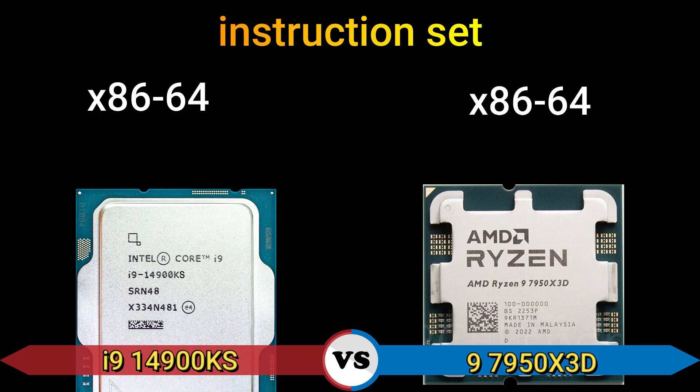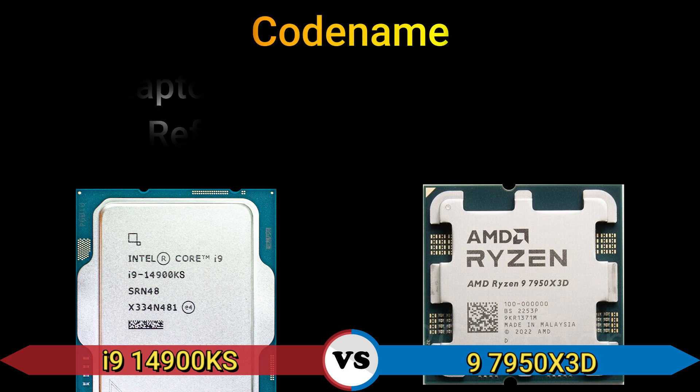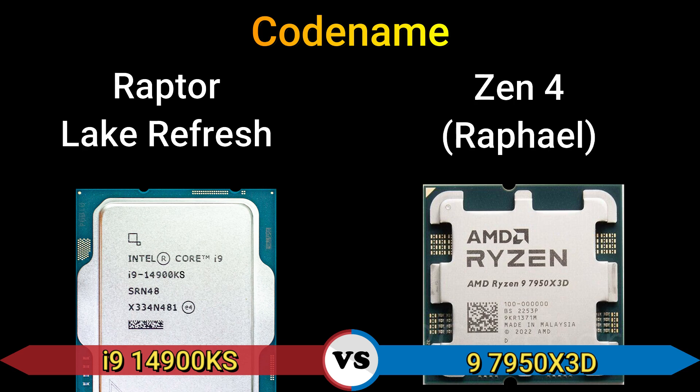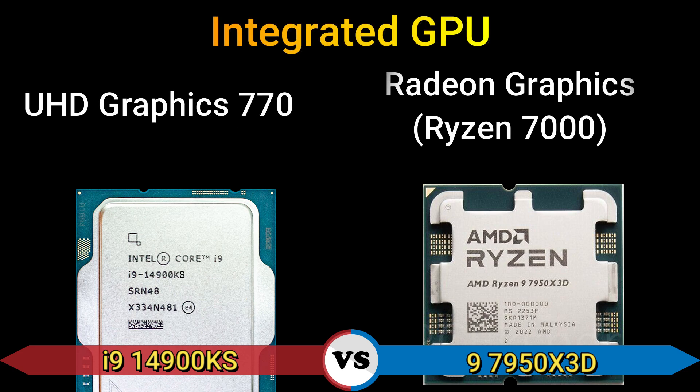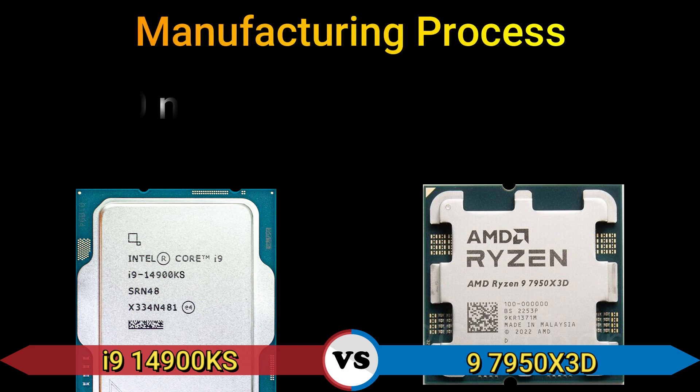Instruction set: x86-64. Code name: Raptor Lake Refresh and Zen 4 Rafael. Integrated GPU: UHD Graphics 770 and Radeon Graphics Ryzen 7000. Manufacturing process: 10 nanometer and 5 nanometer.